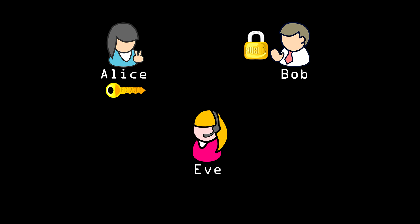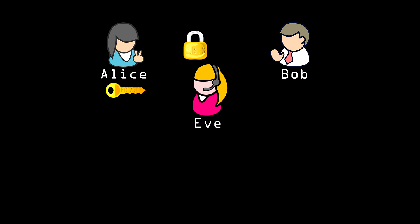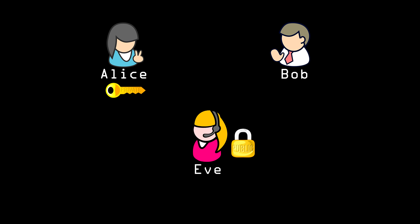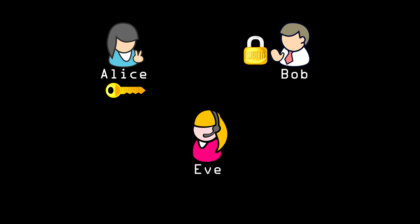Bob can make sure that only Alice can read his messages, and can verify a message was sent by Alice, assuming that Eve hasn't stolen the private key. But there's a weakness here, and that happens when Alice first gives Bob her public key. If Eve intercepts this message, she can substitute her own public key for Alice's.